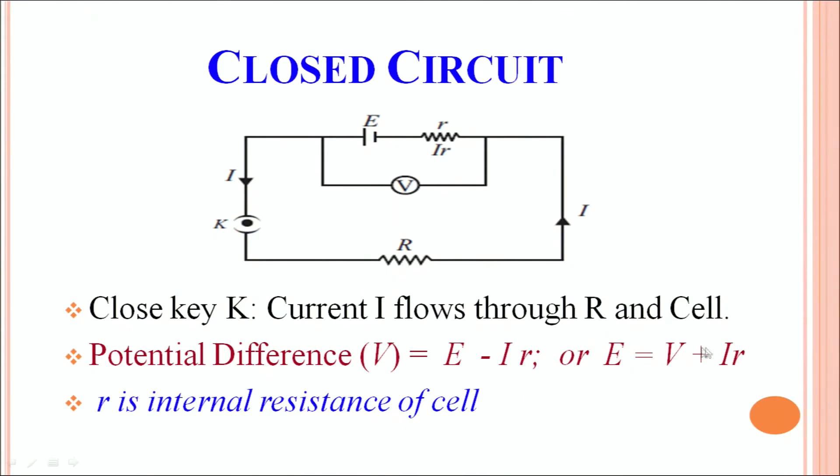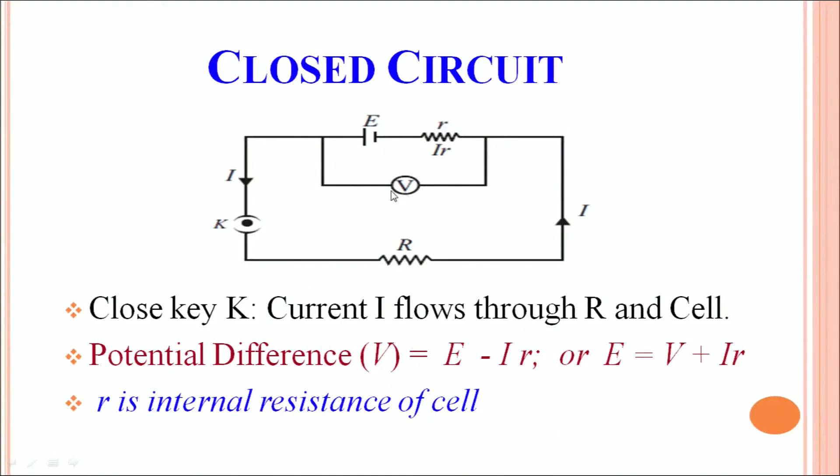Where r is the internal resistance of the cell. Voltage measured by the voltmeter in closed circuit is different from the EMF of the battery.